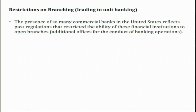For example, in India the State Bank of India has its head office and has started several branches across the country. In each state and each district you can see there is a branch for SBI, and the same for other banks as well in India. In contrast to this, there is another banking structure called unit banking. In unit banking, banks are not allowed to open branches in other places.